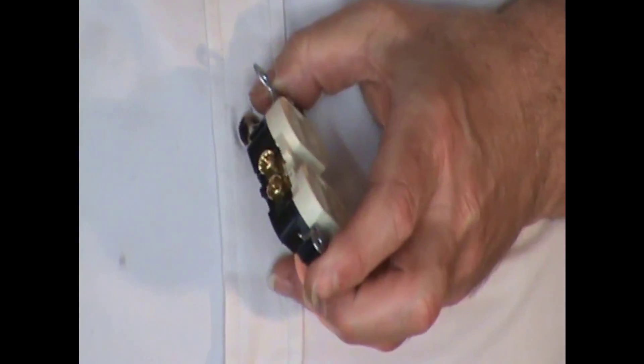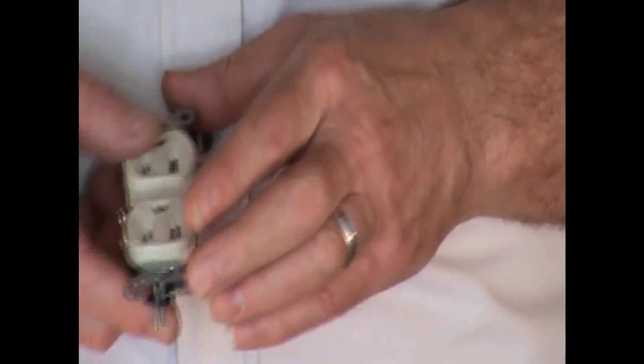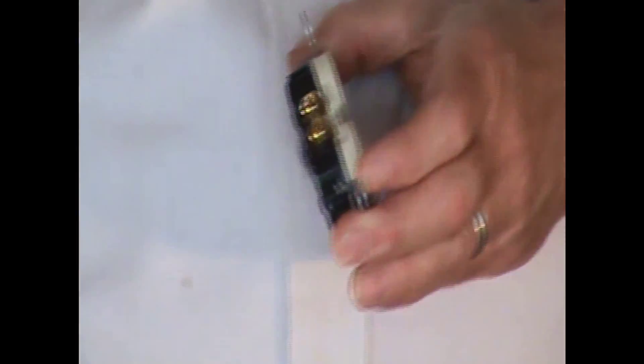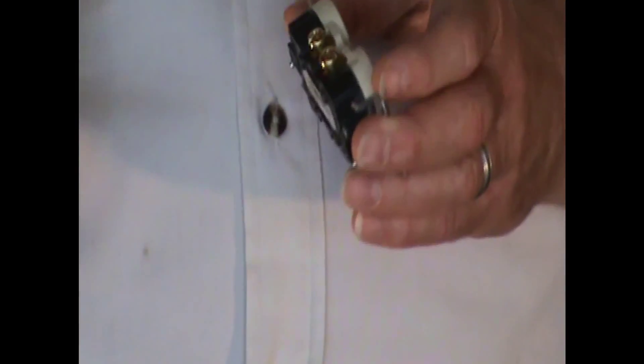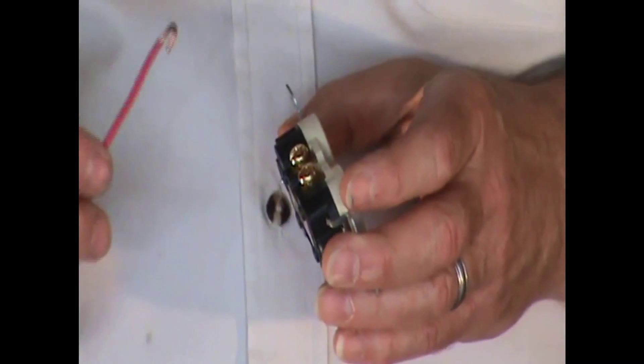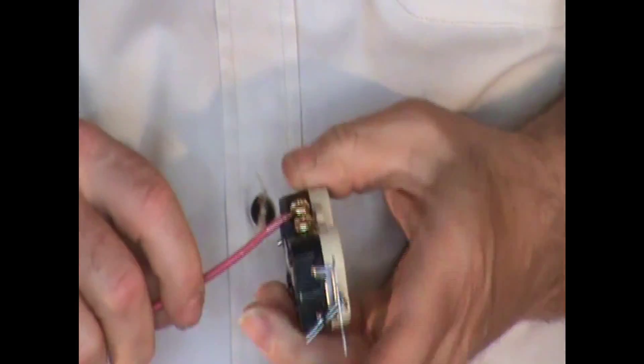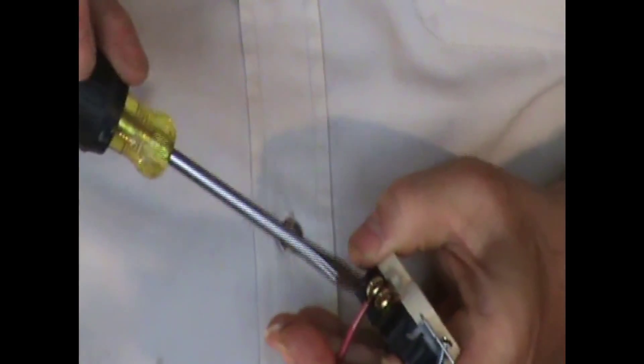And on the other side your neutral is still connected, so one neutral will run it. What you do now is you take your hot wire—and if you watch my other videos you know I always use red, black, and blue for hot. You hook your hot wire and hook it on here and tighten that up.